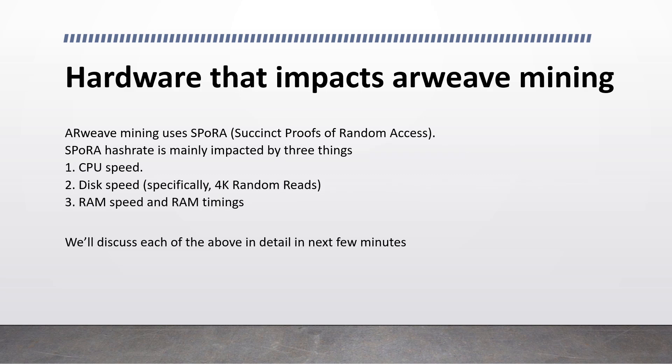Now let's look at how hardware impacts RV mining. RV mining uses SPORA, or Succinct Proofs of Random Access, and the SPORA hash rate is mainly impacted by three things: one, your CPU speed; two, your disk speed — specifically we are interested in 4K random reads; and three, the RAM speed and RAM timings. We'll discuss each of these in detail in the next few minutes.